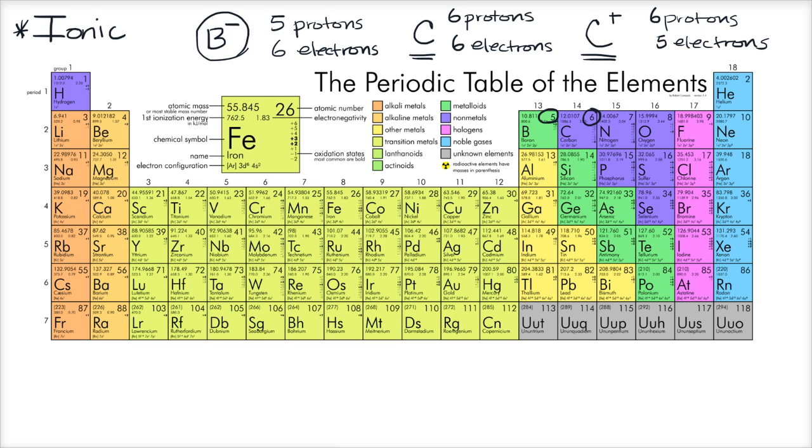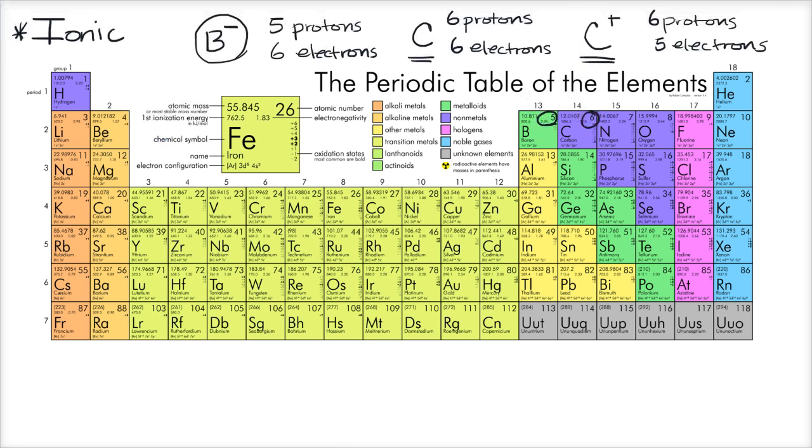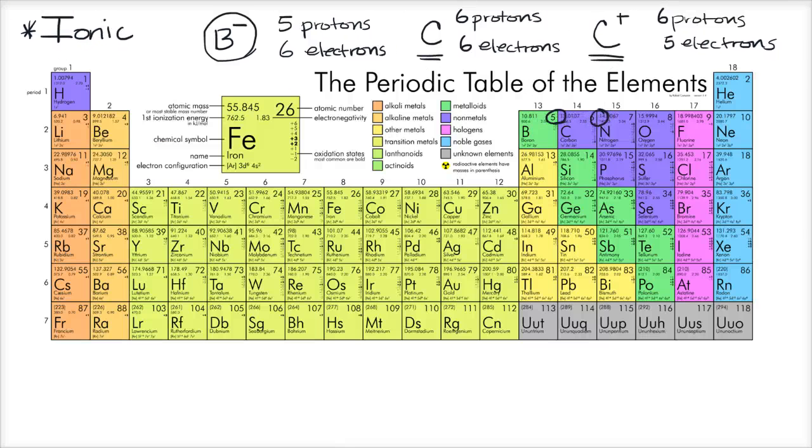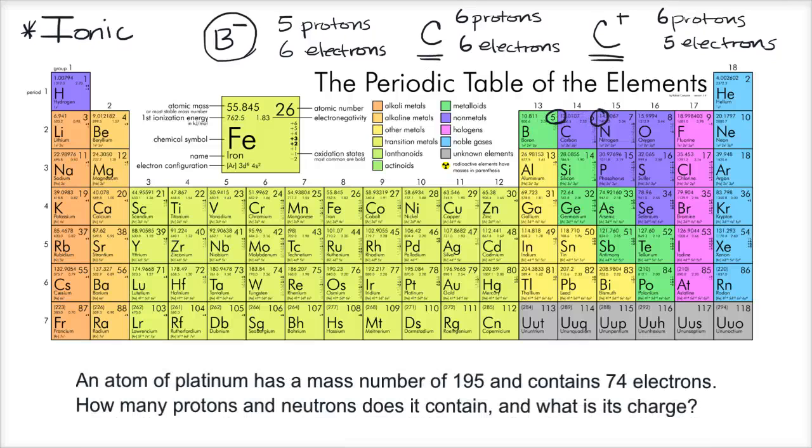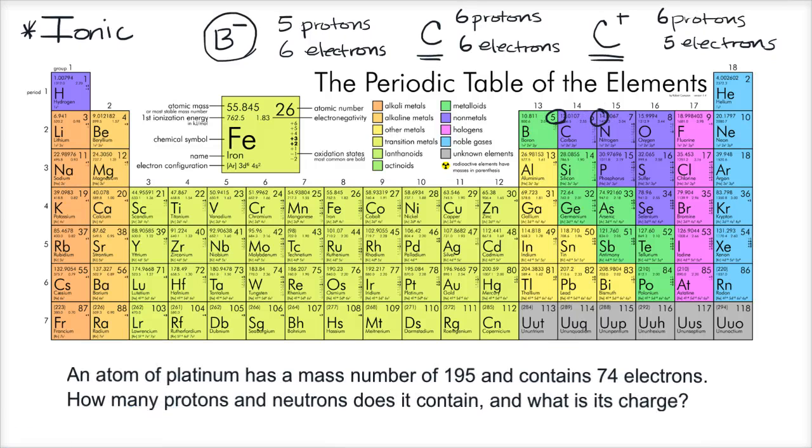Now let's do an example question dealing with this. So our question tells us an atom of platinum has a mass number of 195. So let's just look up platinum on our periodic table. Platinum is sitting right over here. So an atom of platinum has a mass number of 195.